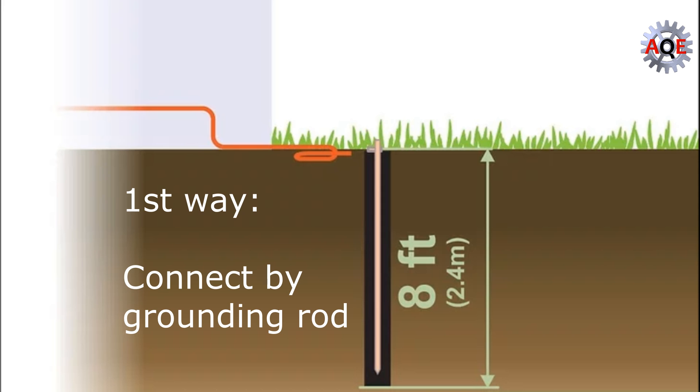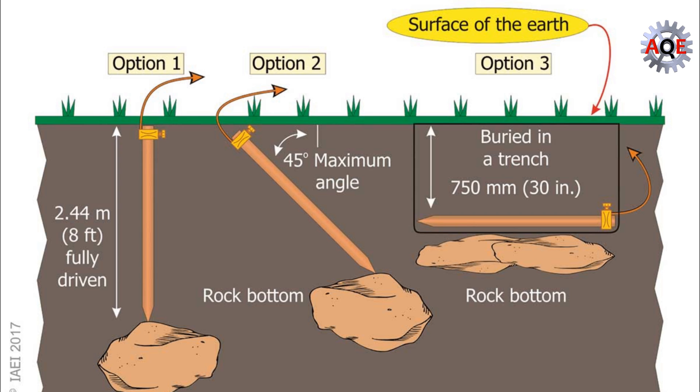Grounding rod, typically an 8-foot-long copper rod that is driven into the soil outside of your home. It's placed far enough away from your home not to run into gravel, concrete, or other building materials used for your foundation, drainage, or piping system.